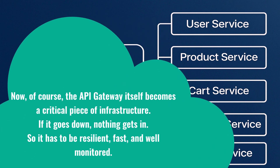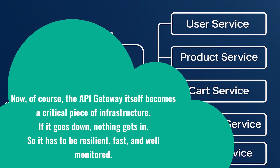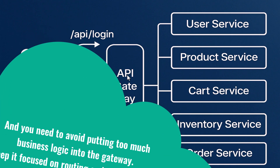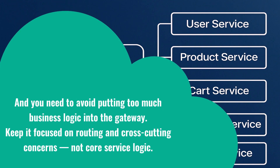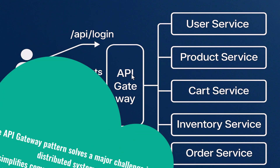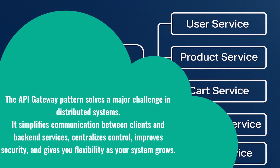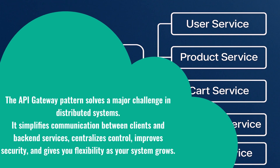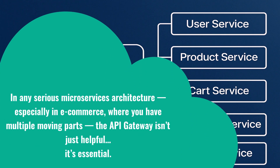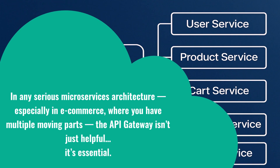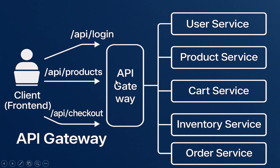The API gateway itself becomes a critical piece of infrastructure — if it goes down, nothing gets in. So it has to be resilient, fast, and well monitored. You also need to avoid putting too much business logic into the gateway; keep it focused on routing and cross-cutting concerns, not core service logic. To wrap up: the API gateway pattern solves a major challenge in distributed systems. It simplifies communication between clients and back-end services, centralizes control, improves security, and gives you flexibility as your system grows. In any serious microservices architecture, especially in e-commerce, the API gateway isn't just helpful — it's essential.